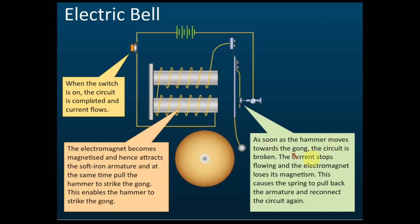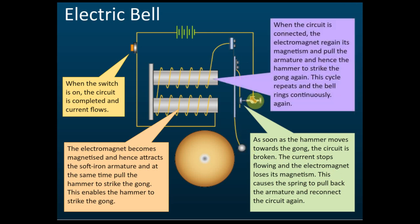As soon as the hammer moves towards the gong, the circuit is broken and current stops. The electromagnet loses its magnetism and the spring pulls the hammer back. When it is pulled back, the circuit is connected again, the electromagnet becomes a magnet again, and pulls the hammer once more. This repeats continuously, making the bell ring.